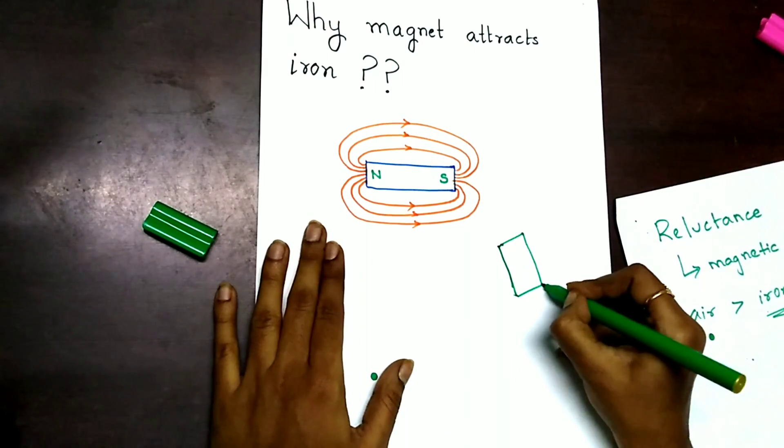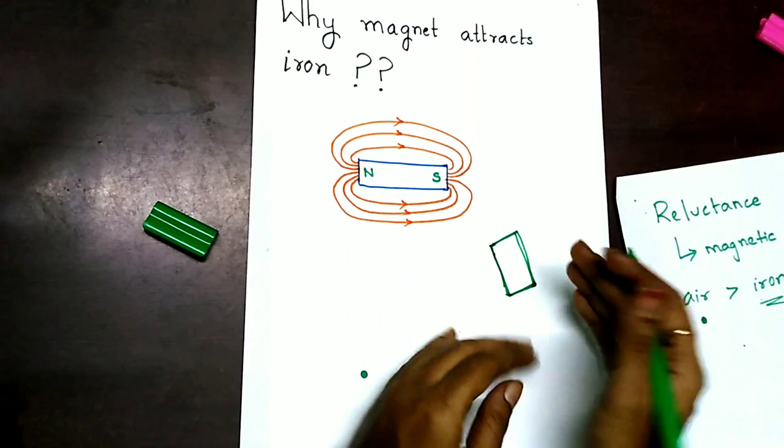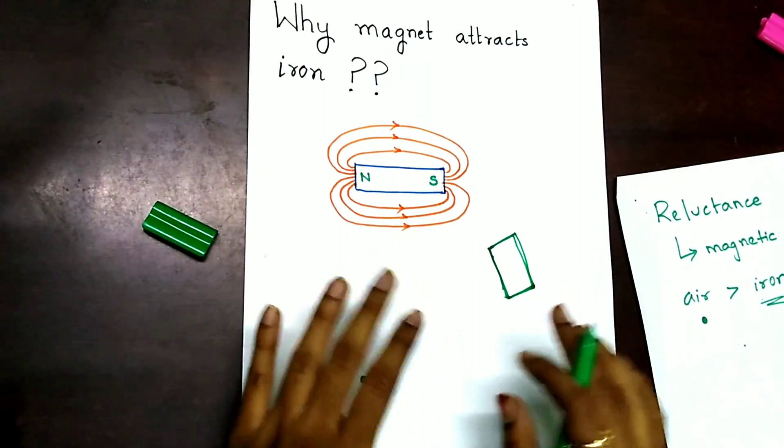normal iron piece which is not at all magnetized prior to this experiment. Say, if I place it near this magnet, what happens is,